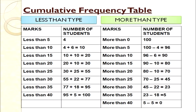We have converted the exclusive series into cumulative series. For less than: using upper limits — less than 5, 10, 15, 20, 25, 30, 35, 40. Cumulative frequencies: 4, 4+6=10, 10+10=20, 20+10=30, 30+25=55, 55+22=77, 77+18=95, 95+5=100. In this way we have constructed the less than cumulative series.